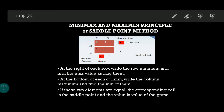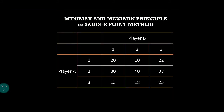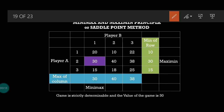To apply the minimax and maximin principle, first find the minimum of each row. The minimum of the first row is 10, the minimum of the second row is 30, and the minimum of the third row is 15. Write these row minimum values.